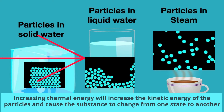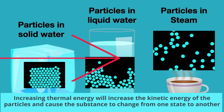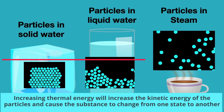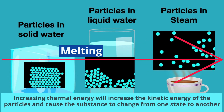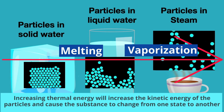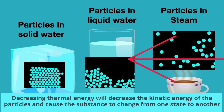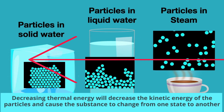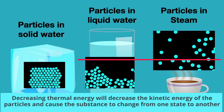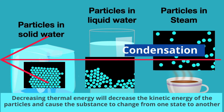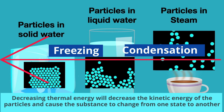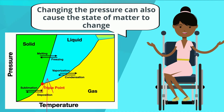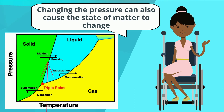Increasing thermal energy will increase the kinetic energy of the particles and cause the substance to change from one state to another. Decreasing thermal energy will decrease the kinetic energy of the particles and cause the substance to change from one state to another. A change in pressure can also cause the state of matter to change.